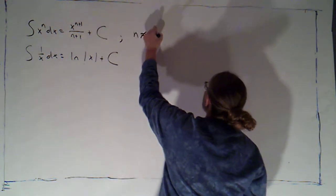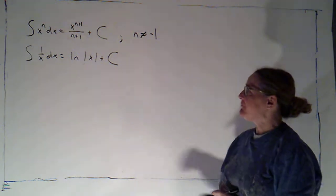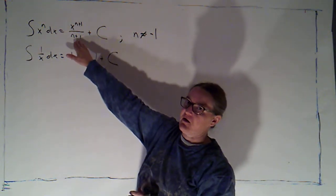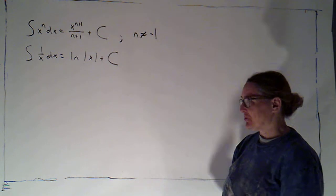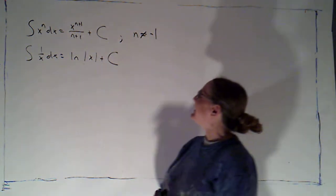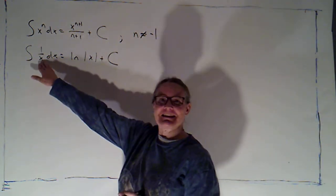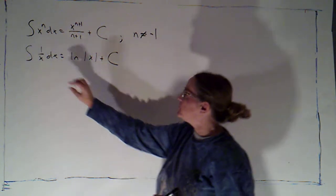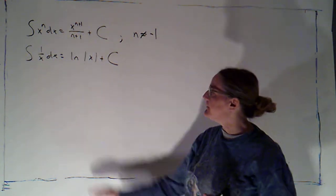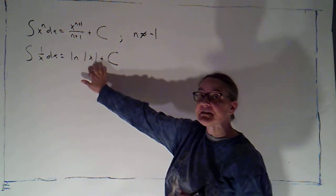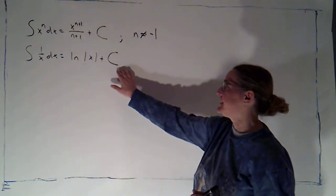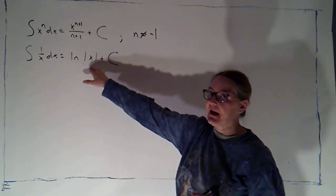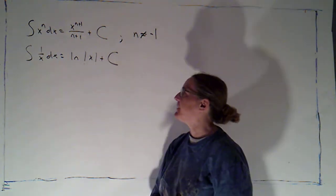This only works if n is not negative 1, because if n was negative 1, that would put a 0 in the denominator. So we have a special rule for when n is negative 1. x to the negative 1 is just the reciprocal function, and the general antiderivative of that is the natural log of the absolute value of x plus c. A really common mistake is to leave off the absolute value, so be very cautious about that.